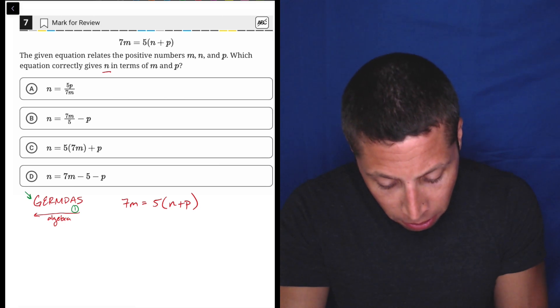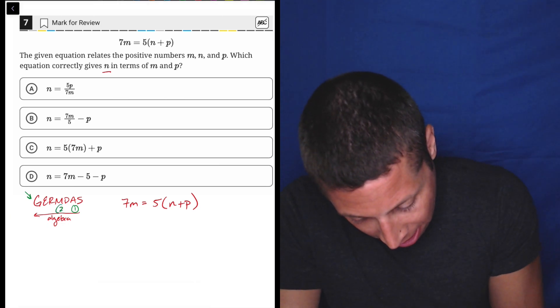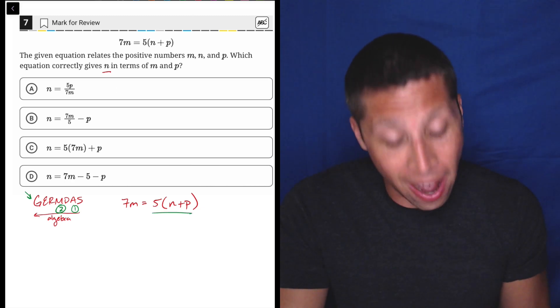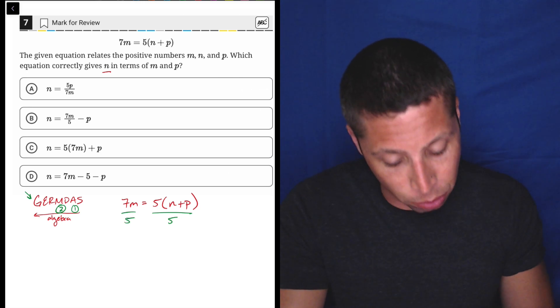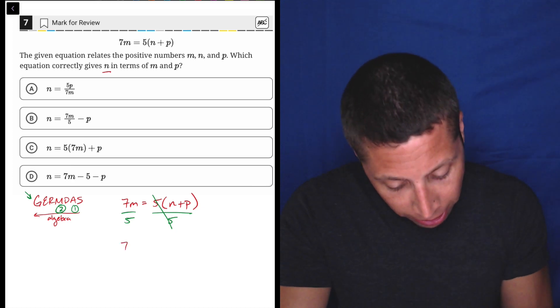So instead, we're moving on to step two here, which is multiplication and division. And so that's why we have 5 being multiplied by this piece, but instead we're going to use division to make it go away. So we divide both sides by 5, this crosses out the 5, and then I'm just going to rewrite it.